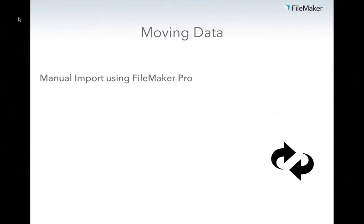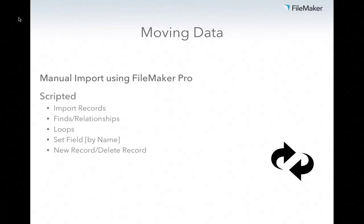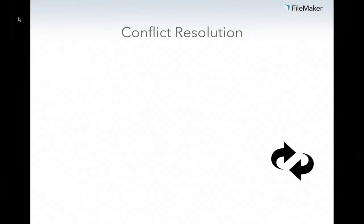Once I've chosen which data I want to sync, I need to actually move that data from offline to online or back. In the moving of data, we have a few different ways. I can manually import data using FileMaker Pro, or I can script it. I have the import record script step, the ability to do finds, create relationships, loop and set fields, create records, and delete records — all available via script. So you can script the copying of data from one file to another.